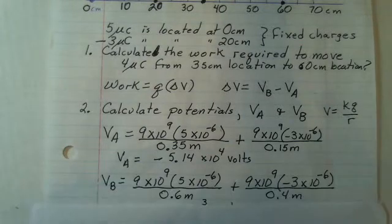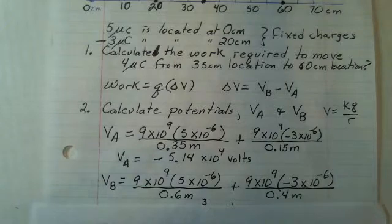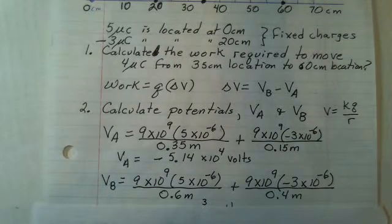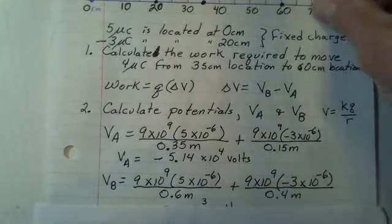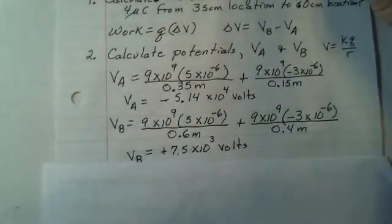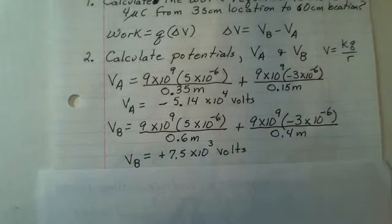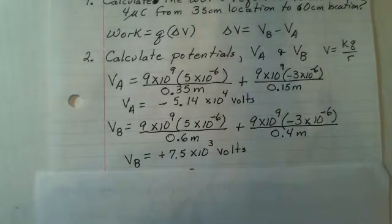Now, we need the second location. We need the potential at 60 centimeters. So our R's change. The Q's stay the same, but the R numbers are different. And the potential at the second location, at point B, is 7.5 times 10 to the third volts.